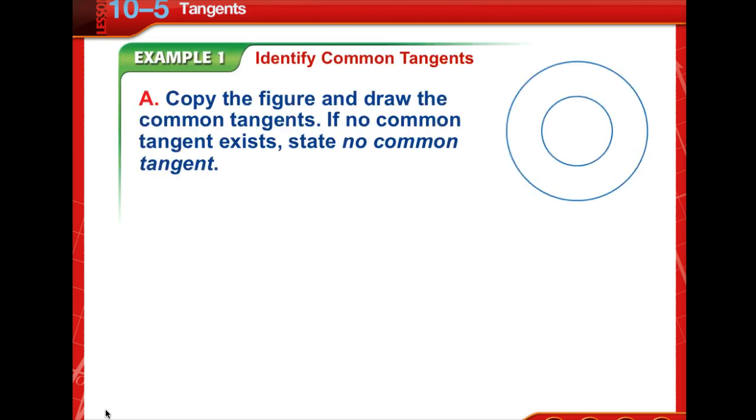Now a tangent is a line in the same plane as a circle that intersects the circle in exactly one point, and it's called the point of tangency. It is very important to note that it intersects the circle in exactly one point.